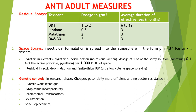You can also use space sprays like pyrethrum extract. Here the insecticidal formulations are spread into the atmosphere in the form of mist or fog to kill the insects. Pyrethrum extract is a nerve poison and has no residual action. The dosage is 1 ounce of the spray solution containing 0.1% of pyrethrin — the active principle — per 1000 cubic feet of space. Some space sprays have residual action, for example malathion and fenitrothion. Then genetic control — these are in the research phase — where we can use sterile male technique, cytoplasmic incompatibility, chromosomal translocation, sex distortion, and gene replacement.